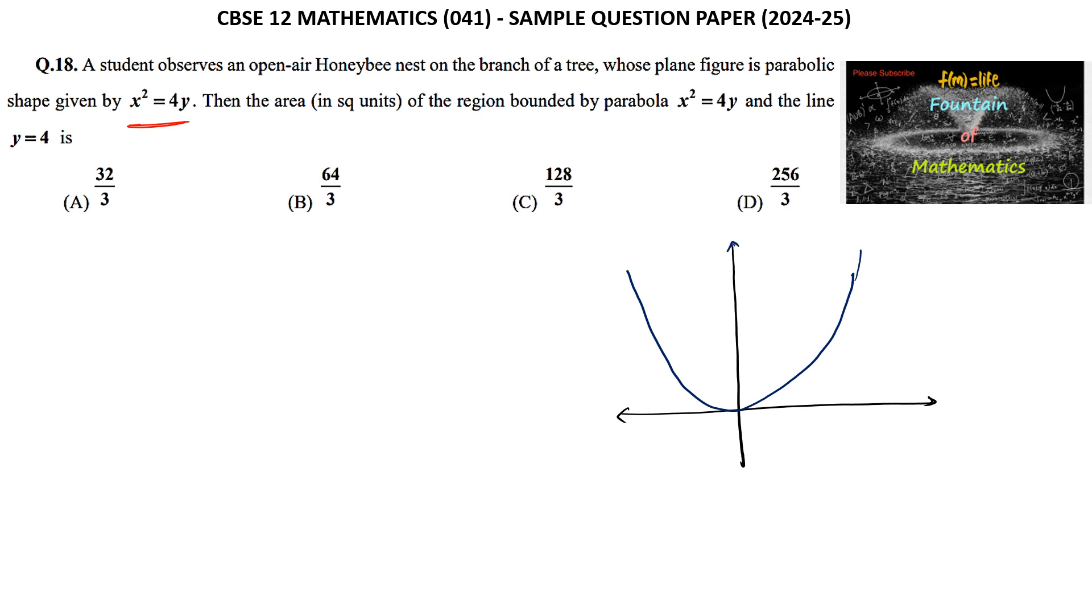This graph is symmetrical about the y-axis, and the area of the region bounded by this parabola and the line y = 4. We can see the line, so this is y = 4. Then the area of the region bounded by this.